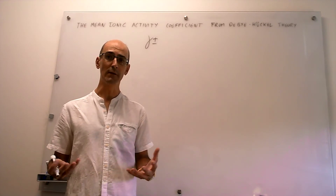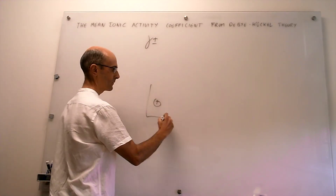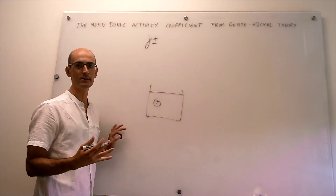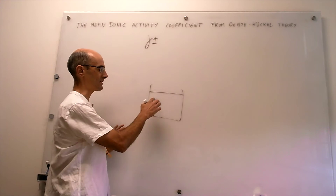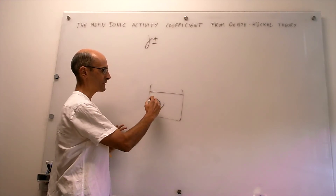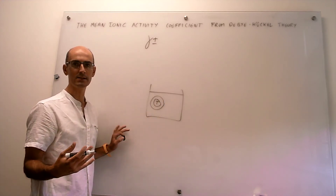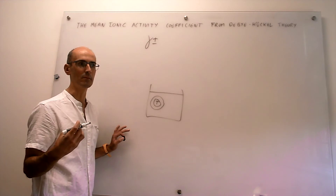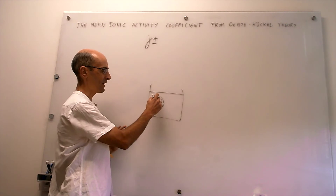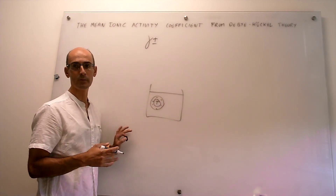The basics of the theory are pretty straightforward. Imagine that you have an ion in solution. The main tenet of the theory is that every time you have an ion in solution of some charge — in this case a positive charge — there's going to be an ionic atmosphere of counter charge. This ionic atmosphere is simply a concentration of negative charge ions that tend to be closer to a positive ion than elsewhere in solution.